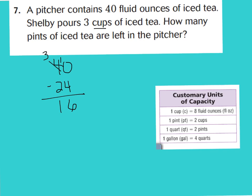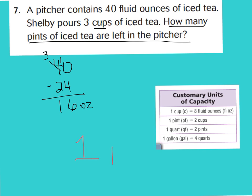Subtract 24 ounces from 40 and we have 16 ounces left. The question asks how many pints are left, not ounces. A pint equals 2 cups, and if 1 cup is 8 ounces, then 2 cups equals 16 ounces — which is exactly what we have. So there is 1 pint left, because 1 pint has a value of 16 ounces. 2 cups equals 1 pint, and each cup has 8 ounces, making 16 ounces total — which is why we have 1 pint left.